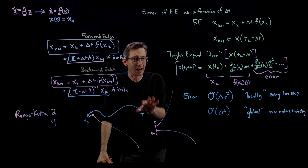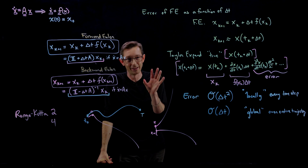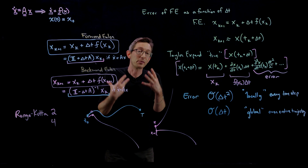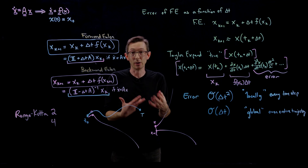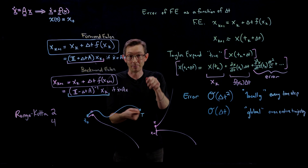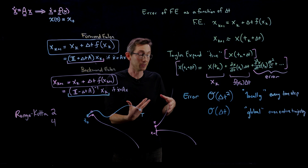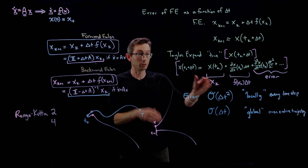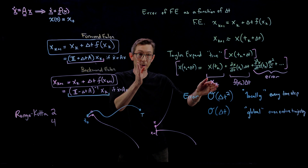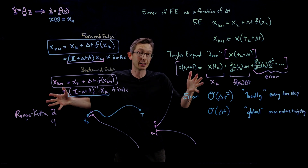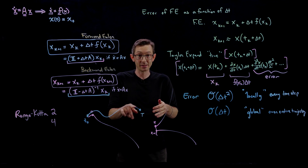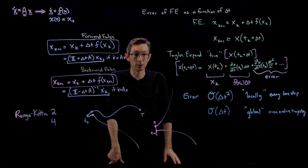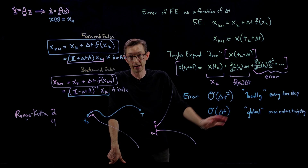I'll talk more about chaotic systems later — that's just a teaser. For the simple deterministic systems we often care about, like pendula or spring-mass-dampers, taking the local error per time step and multiplying by the number of time steps is a pretty good approximation of the global trajectory error.